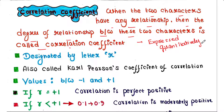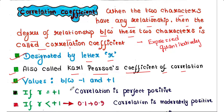Correlation coefficient is designated by the letter r — small r. It is also called Karl Pearson's coefficient of correlation. The correlation coefficient values lie between minus one and plus one.